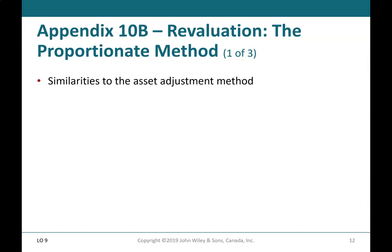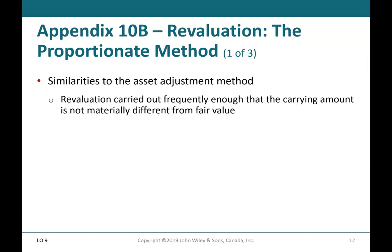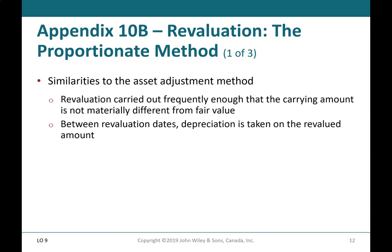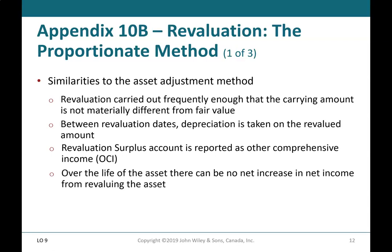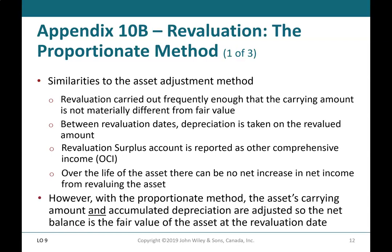Appendix 10B: Revaluation — the Proportionate Method (1 of 3). Similarities to the asset adjustment method: revaluation is carried out frequently enough that the carrying amount is not materially different from fair value; between revaluation dates, depreciation is taken on the revalued amount; and the revaluation surplus account is reported as other comprehensive income. Over the life of the asset, there can be no net increase in net income from revaluing the asset. With the proportionate method, the asset's carrying amount and accumulated depreciation are both adjusted so the net balance equals the fair value of the asset at the revaluation date.